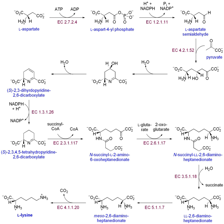These elements create monomers, the building blocks for macromolecules. Some important biological macromolecules include proteins, which are composed of amino acid monomers joined via peptide bonds, and DNA molecules, which are composed of nucleotides joined via phosphodiester bonds.